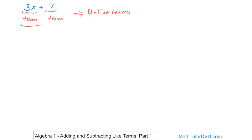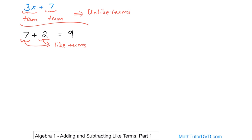Let's take a simpler example I know you're more familiar with. What if you have 7 plus 2? Are you allowed to add these? Well, yes, of course — the answer is nine. This is a term and this is a term, and these are like terms. There's no variable here and no variable here. So because they match in terms of variables — in this case there aren't any — you can add them and get nine. This is just basic addition from when you were a little kid.